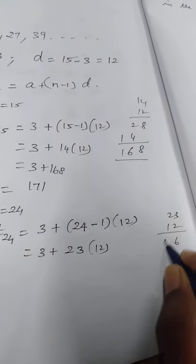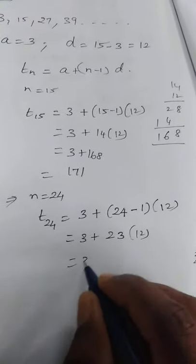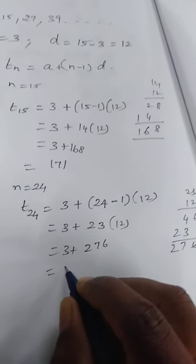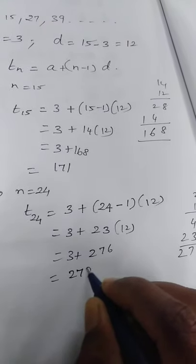23 into 12. 3 2s are 6, 2 2s are 4, 1 3 is 3, 1 2 is 2, 6, 7, 2. 3 plus 276 add this 2 value, 3 plus 276, 279.